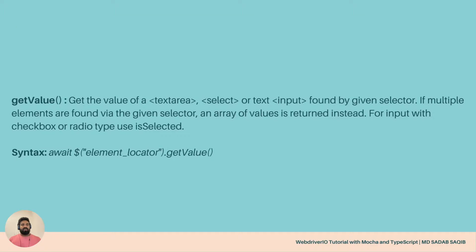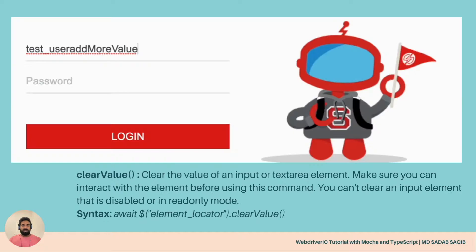Then we have getValue. Suppose once you enter the data, you want to validate whether the entered value or data is correct or not — you want to assert it. So you can use getValue to retrieve that particular data that you have entered, and then you can assert it.